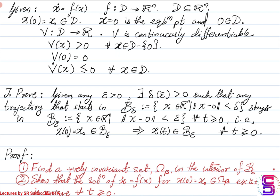If this derivative V-dot is negative definite, then the equilibrium point which is the origin under consideration is asymptotically stable. We will now start with the proof of this theorem.